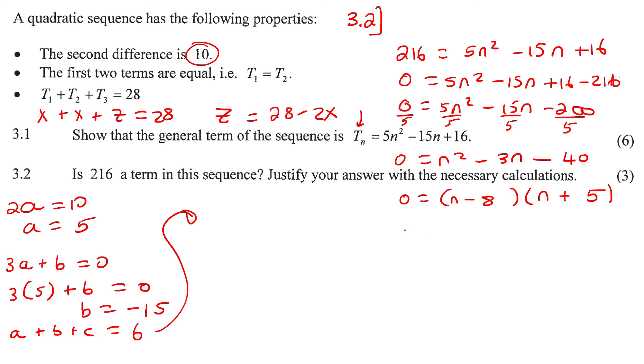Now we can just solve and say n minus 8 equals zero or n plus 5 equals zero, so n is 8 or n is minus 5. Now what is n? n is the number of terms, so you can't have a negative number of terms, so n is 8.